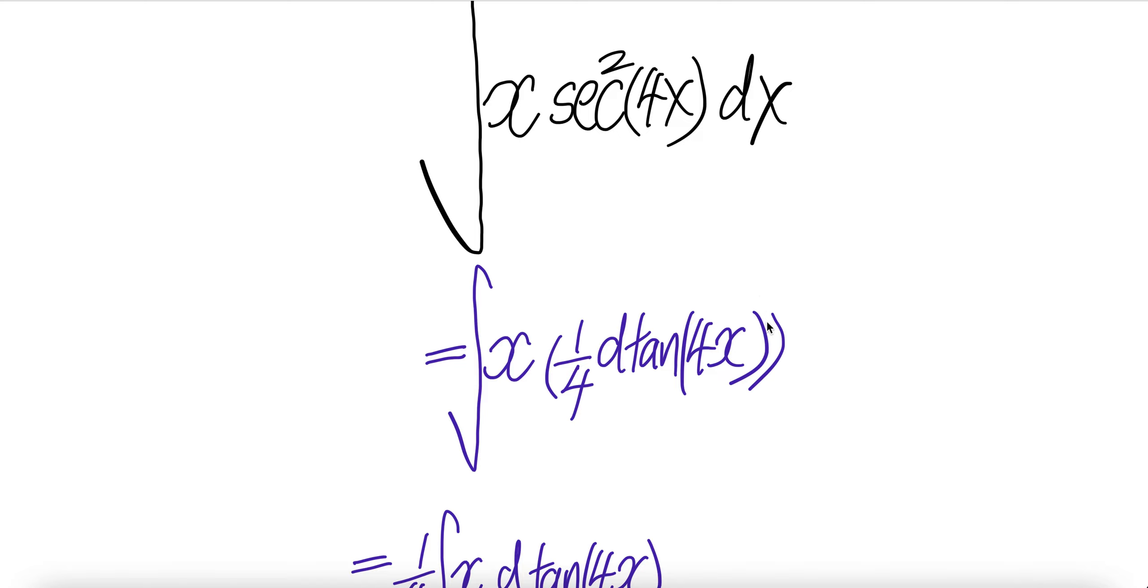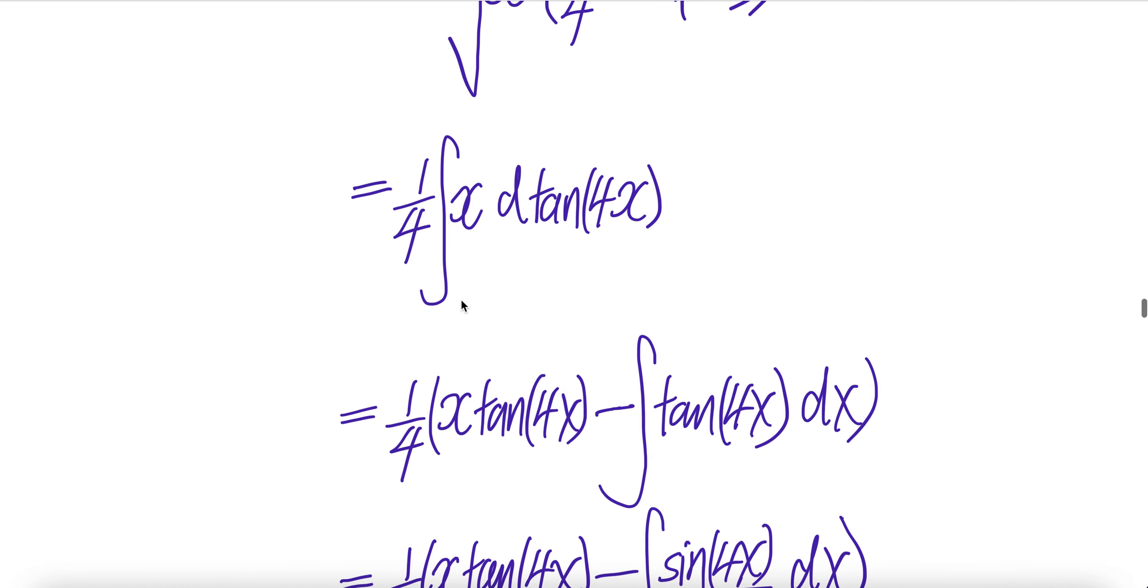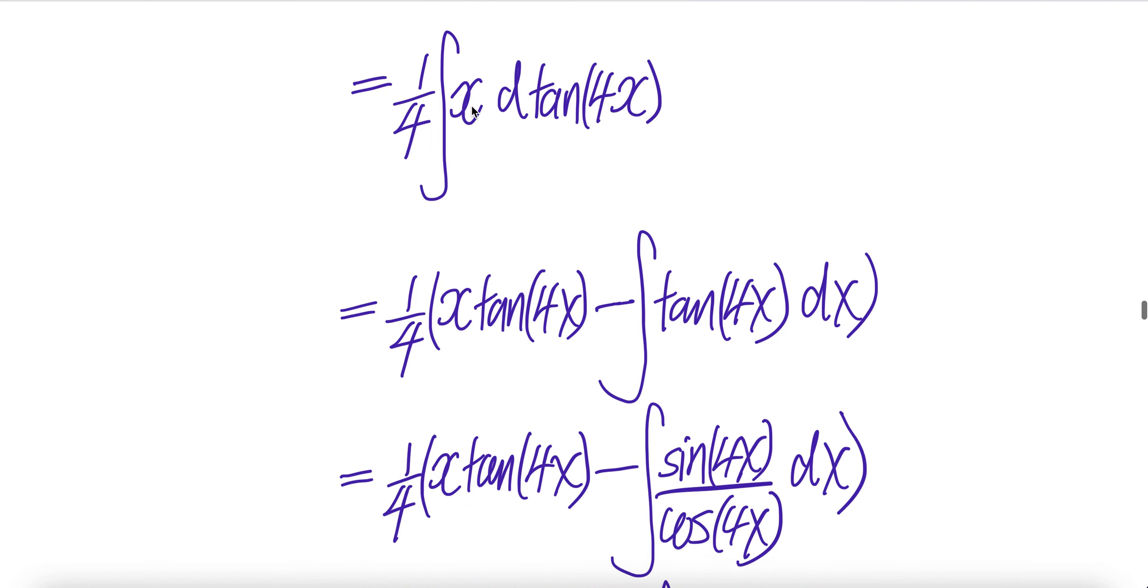So this piece is the same thing as that. Pull the quarter out of the integral, you get integral of x d tangent 4x. Now you have integral of u dv. Applying integration by parts will be uv minus integral of v du.